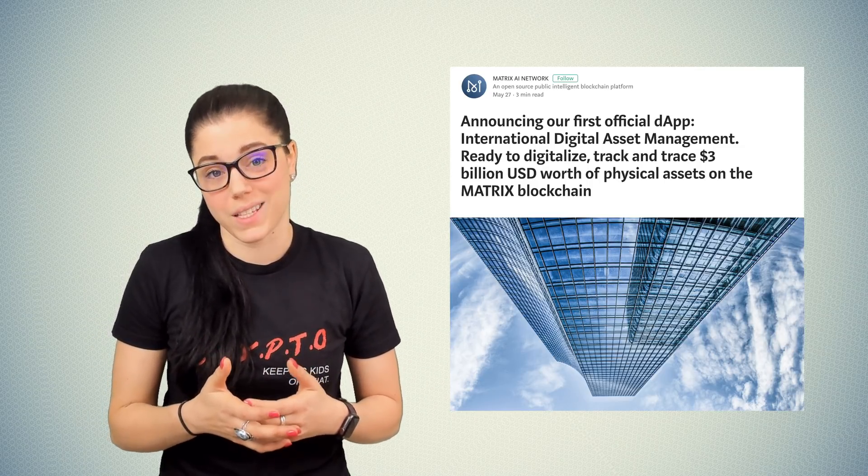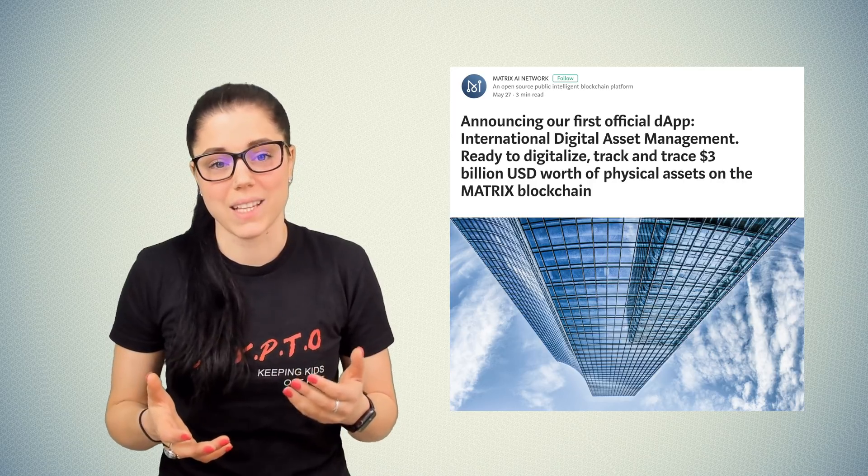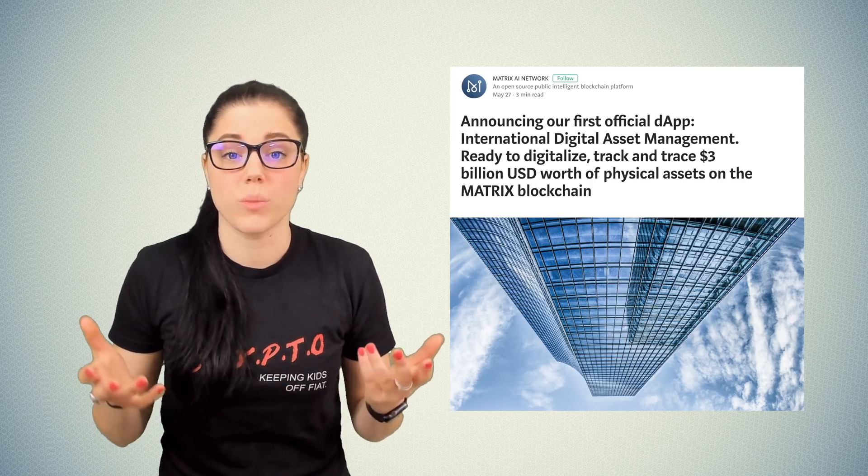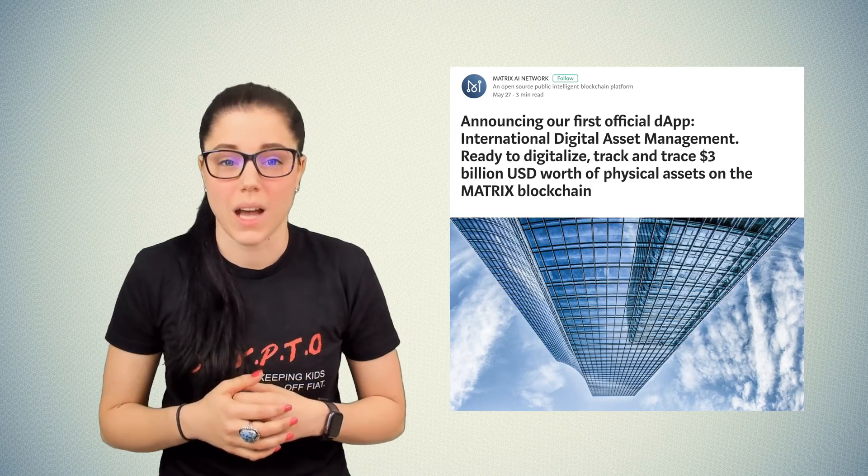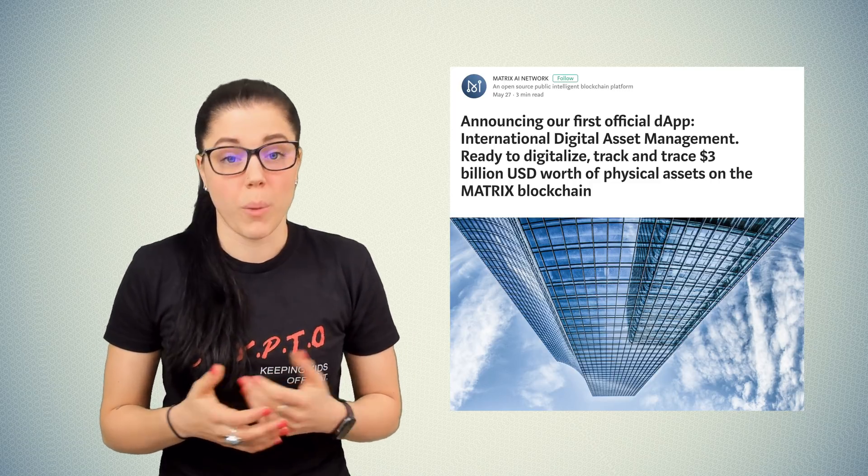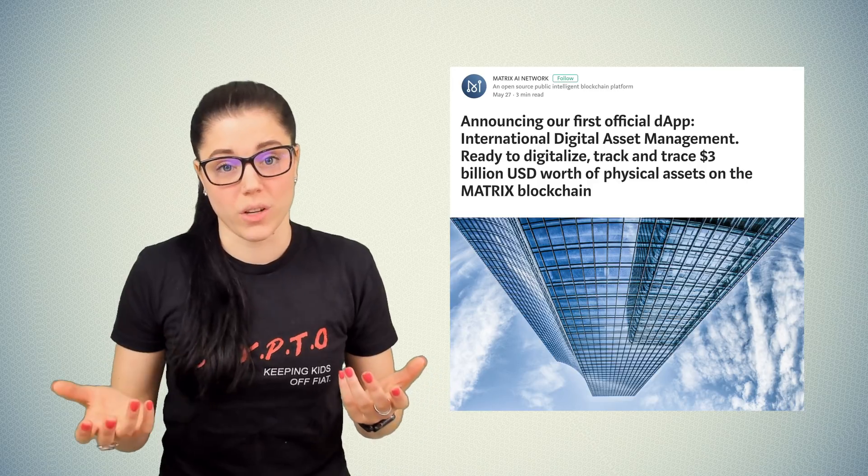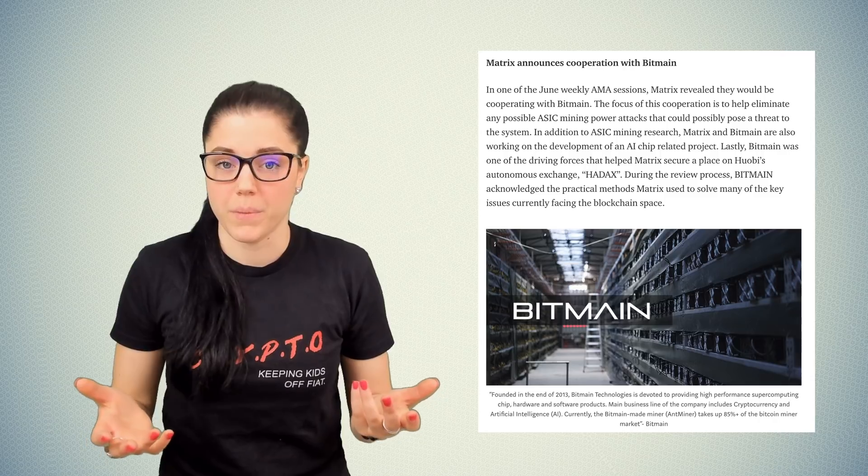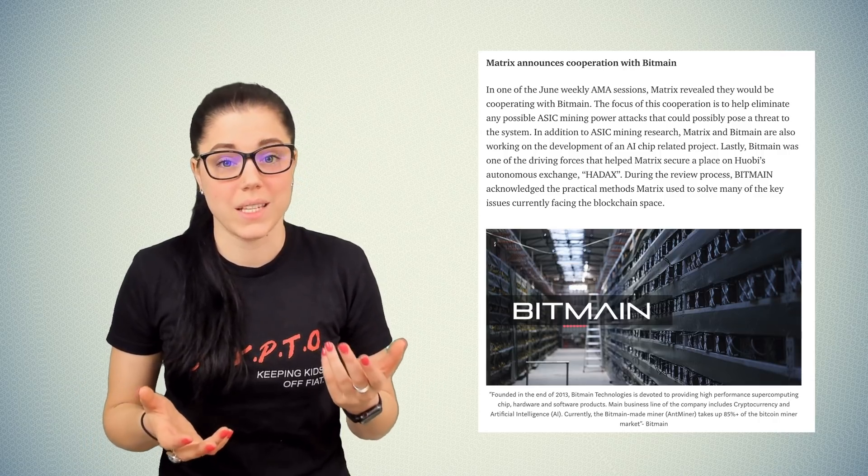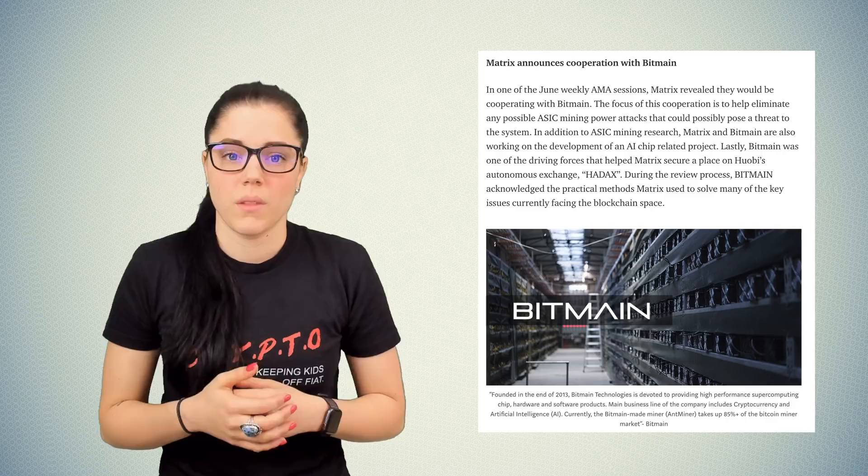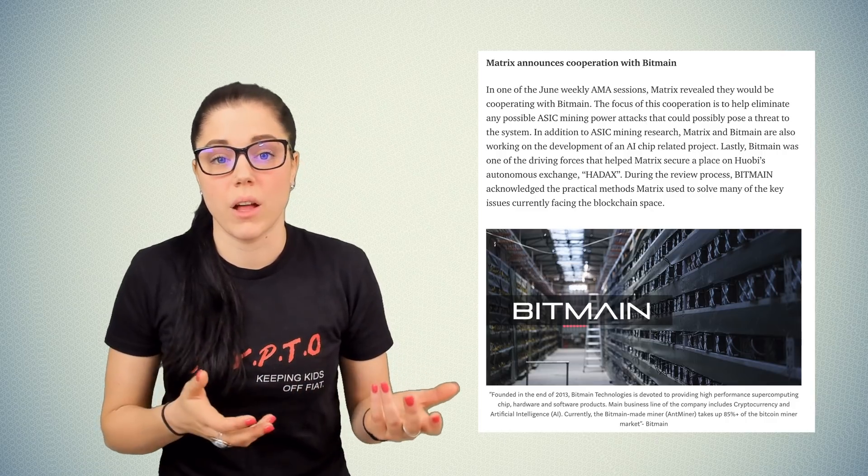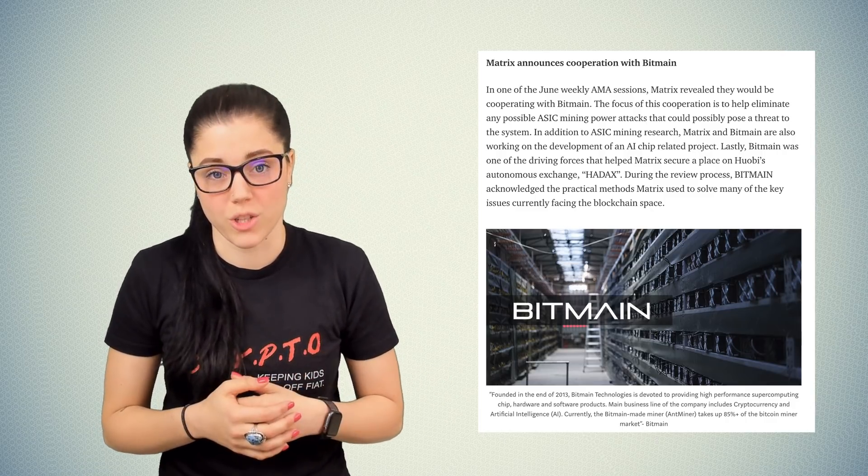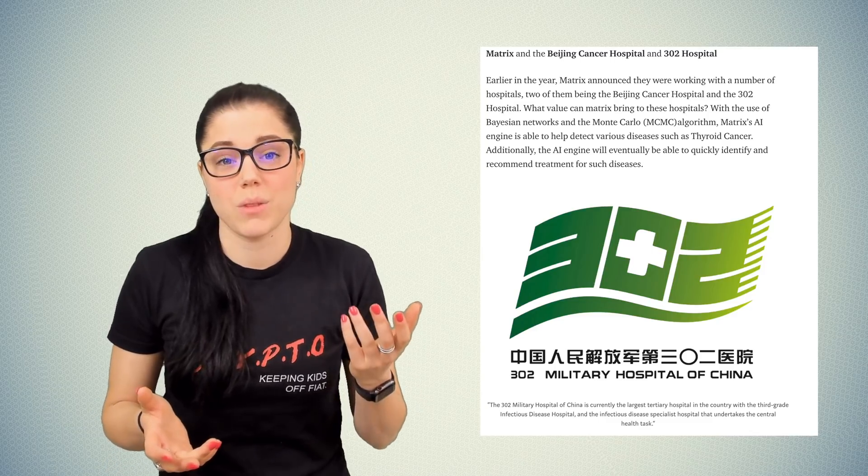As far as partnerships go, the list is quite long, but I'll just mention a few. They partnered with the International Digital Asset Company IDA, which is an asset digitization and tracking company. IDA holds approximately 3 billion in US dollars worth of assets in the form of natural resources. The partnership between IDA and Matrix allows the resources to be further digitized using the Matrix blockchain. They also have a partnership with Bitmain to help eliminate any possibilities of ASIC mining power attacks that could possibly pose a threat to the system. Matrix and Bitmain are also working on the development of an AI chip related to their project.